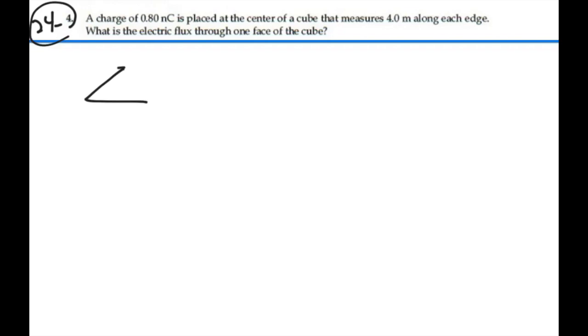So we have a cube, 4 meters on an edge, and inside, at the center, we have a charge, 0.8 nC. That charge is emanating E-field, this is a positive charge, in all directions like this.